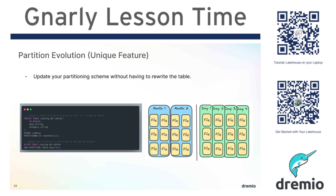With Apache Iceberg, it's able to track the history of partitioning of the table and track what data files and what manifests had a particular partitioning scheme applied to them. So when you run a query, it can take advantage of the partitioning of those particular files to weed them out. It creates separate plans: data written with this partitioning scheme gets this plan, because it has the metadata to figure that out.